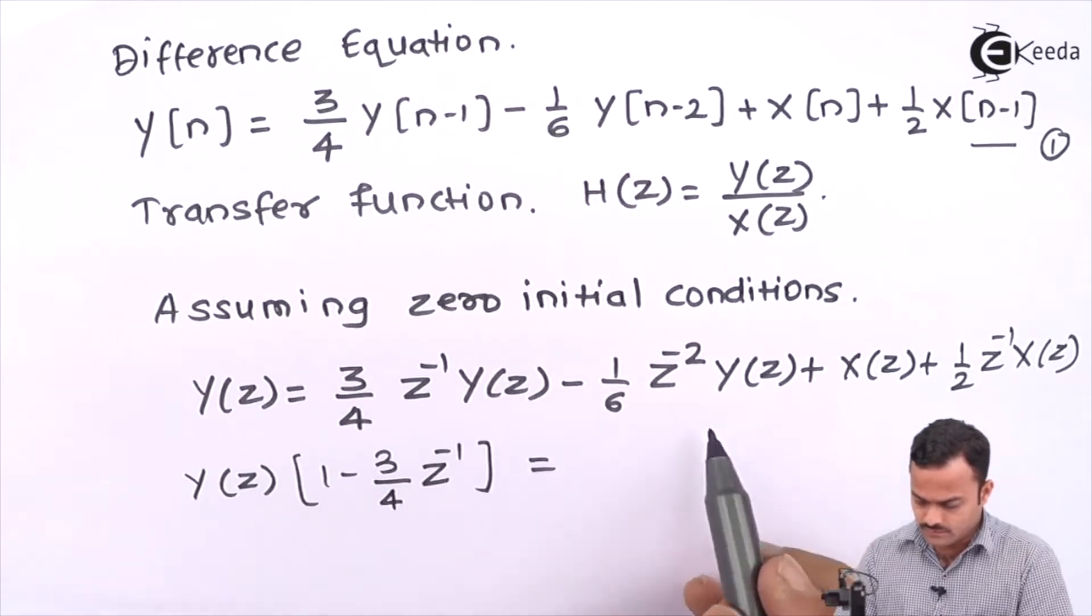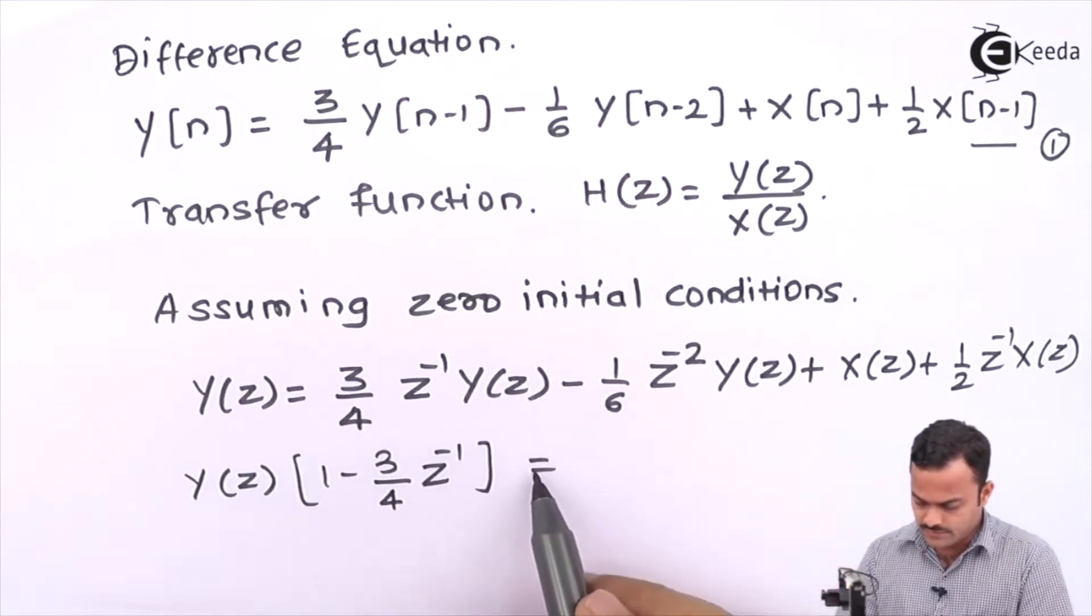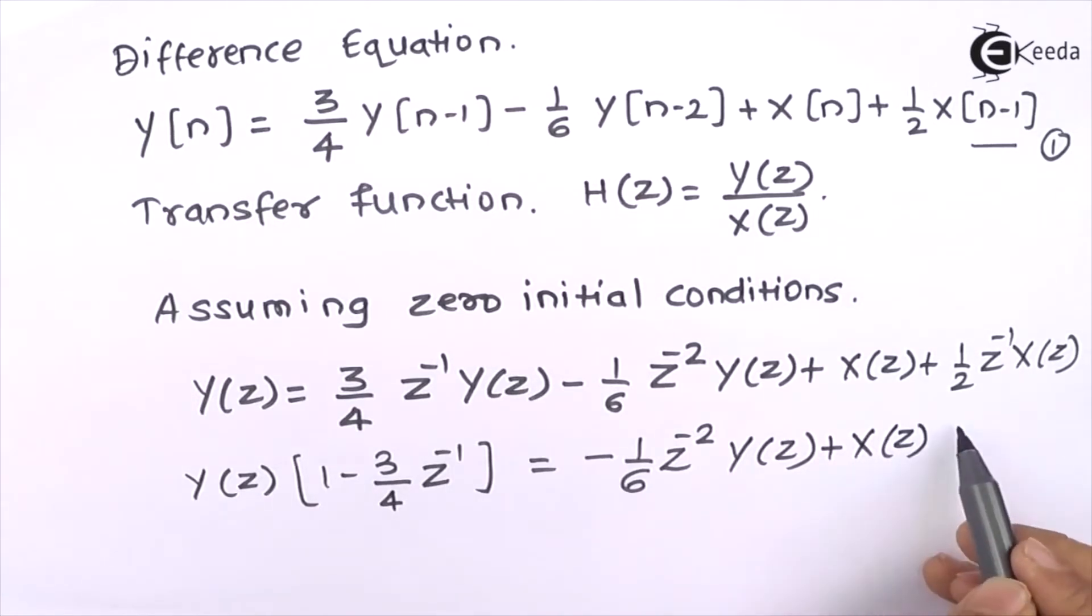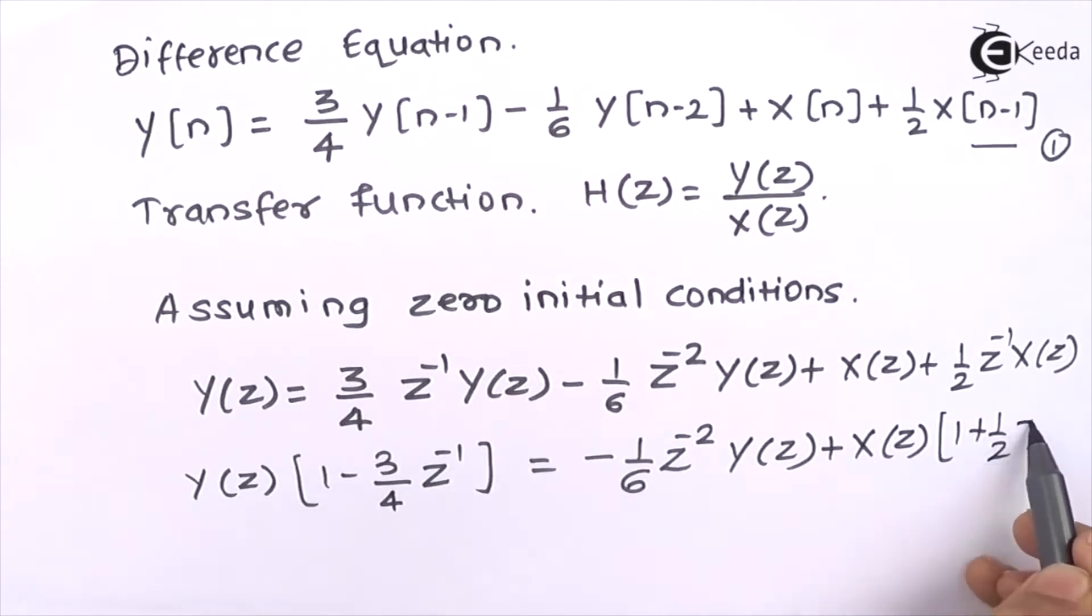We are having this term also, so let's skip this over here. In the next step we will take this also on the left hand side: X(z) inside a bracket 1 + 1/2 z^(-1).